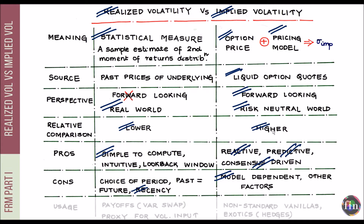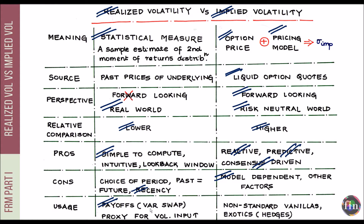Regarding usage: realized volatility appears in the payoffs of instruments that deal with volatility directly, such as variance swaps, which use realized variance, and volatility swaps. Also, if there is no existing options market for an underlying asset and you need to price an option on it, realized volatility can provide a good ballpark input for option pricing — a very good proxy for a reasonable volatility input.